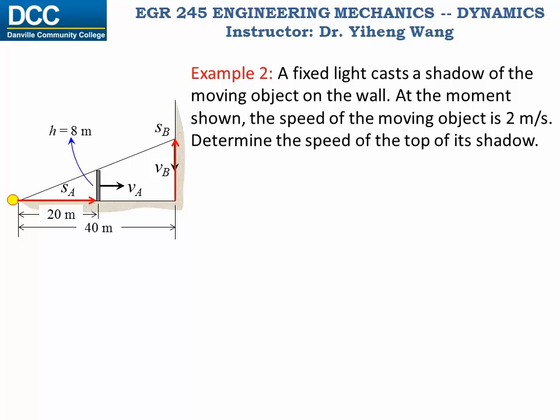And then again the most important step, to find the dependent relation between these two positions. Since these two triangles are similar triangles, therefore we can write the ratio between SA and 8 equals to the ratio between 40 and SB, or these two ratios are the tangent value of the same angle anyway. So from here we get SB equals to 320 times SA to the negative first power, or simply 320 over SA.